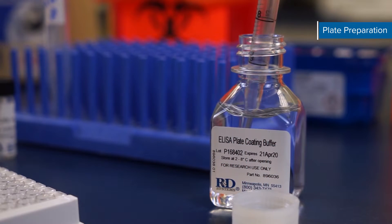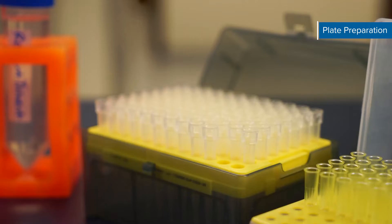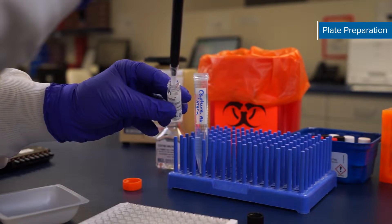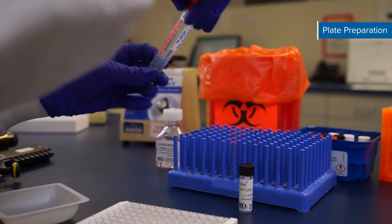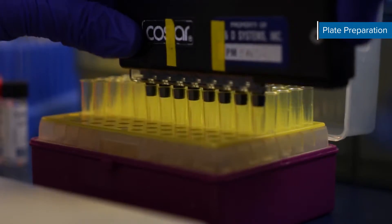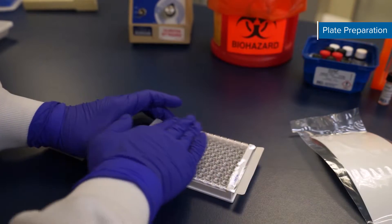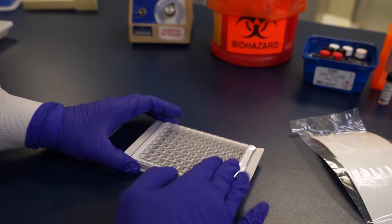Now prepare the plate. Careful and precise plate preparation is essential to good assay performance. Dilute the capture antibody to the working concentration in PBS. After gentle mixing immediately coat a 96-well high protein binding microplate with precisely 100 microliters per well. Seal the plate and incubate overnight at room temperature.